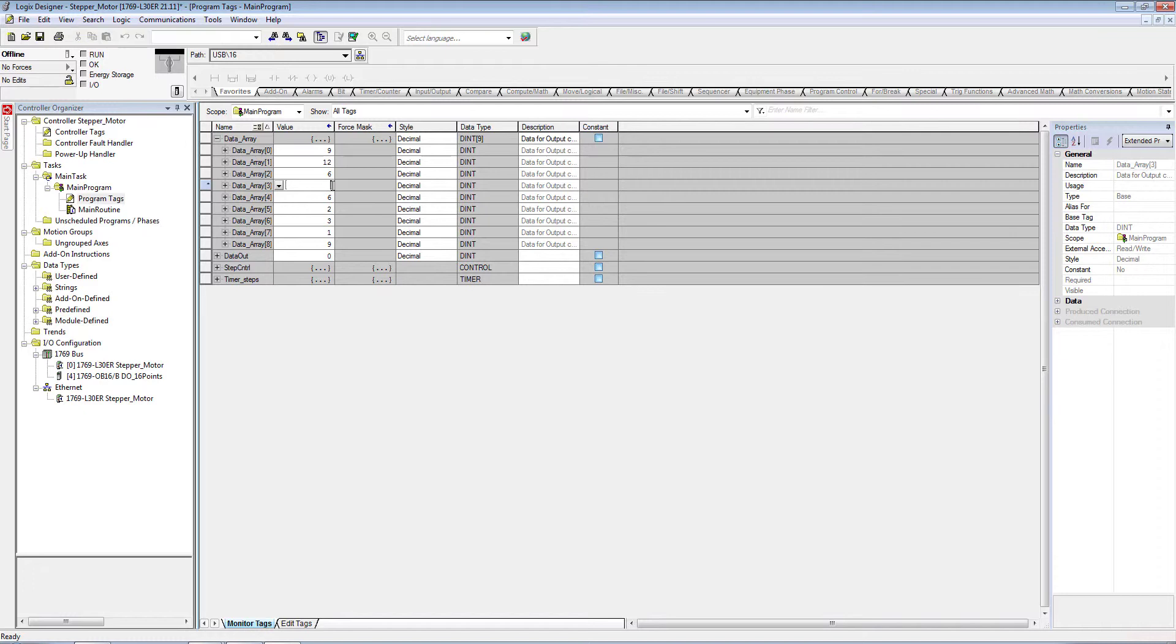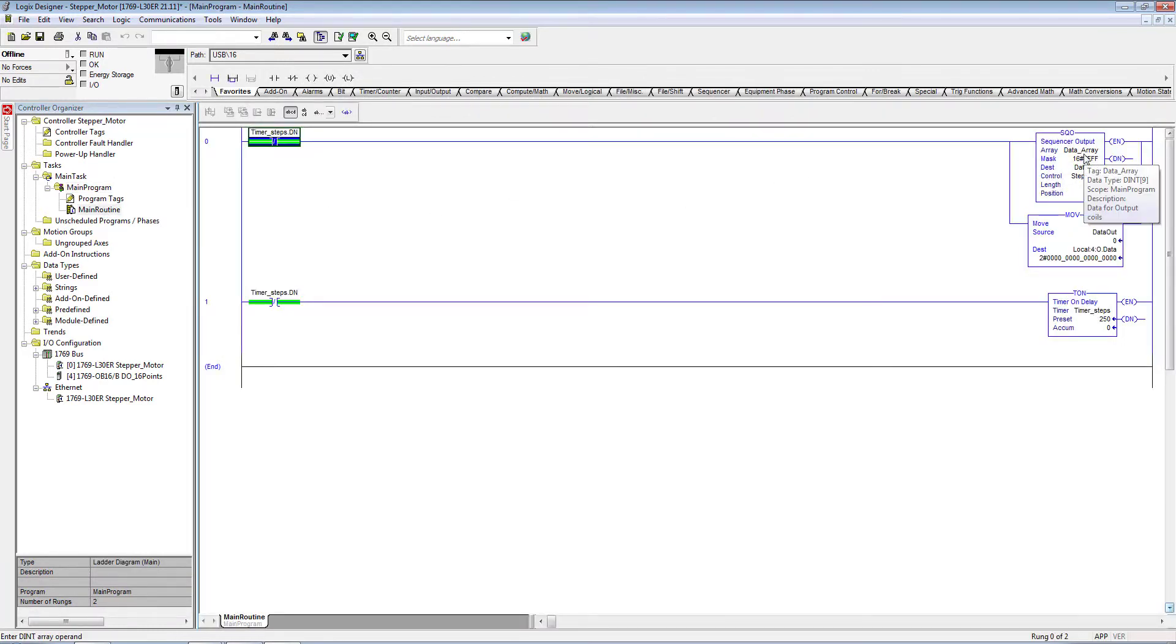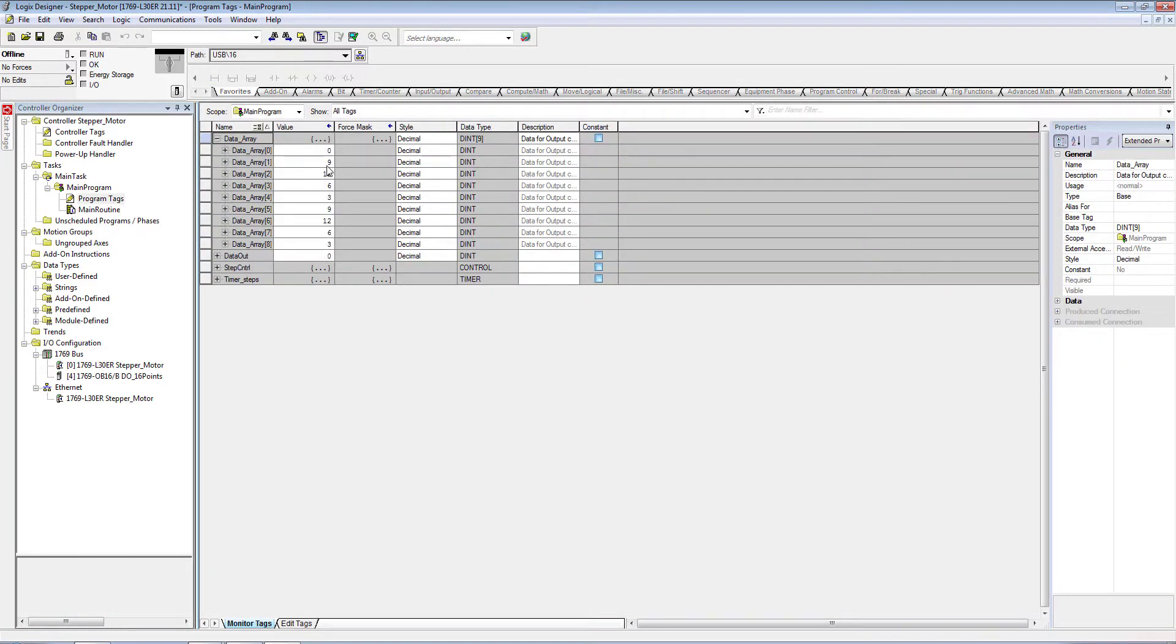There was a small problem - the sequencer output always skips the first element in the data array. The first element should be zero, then our main data should be in first place. Whenever our sequencer output is triggered, it will point to this data.